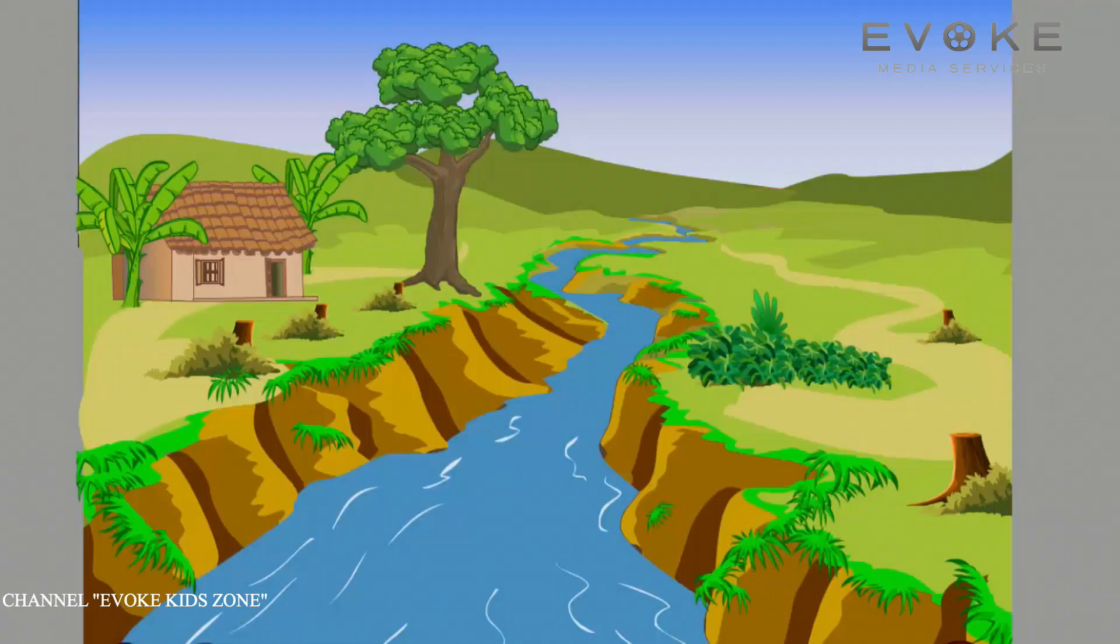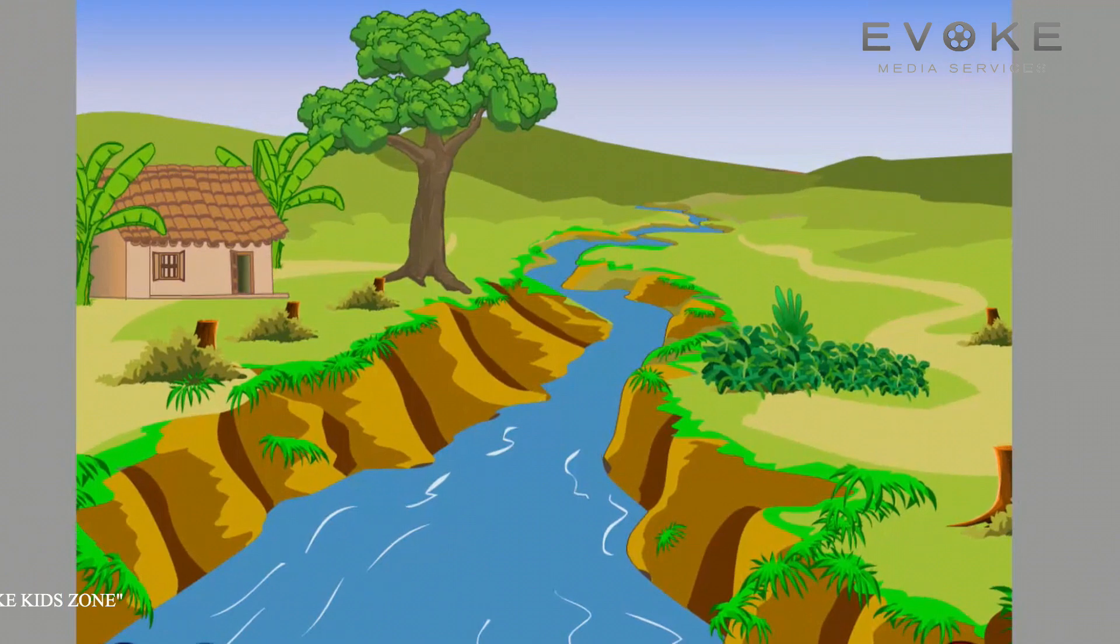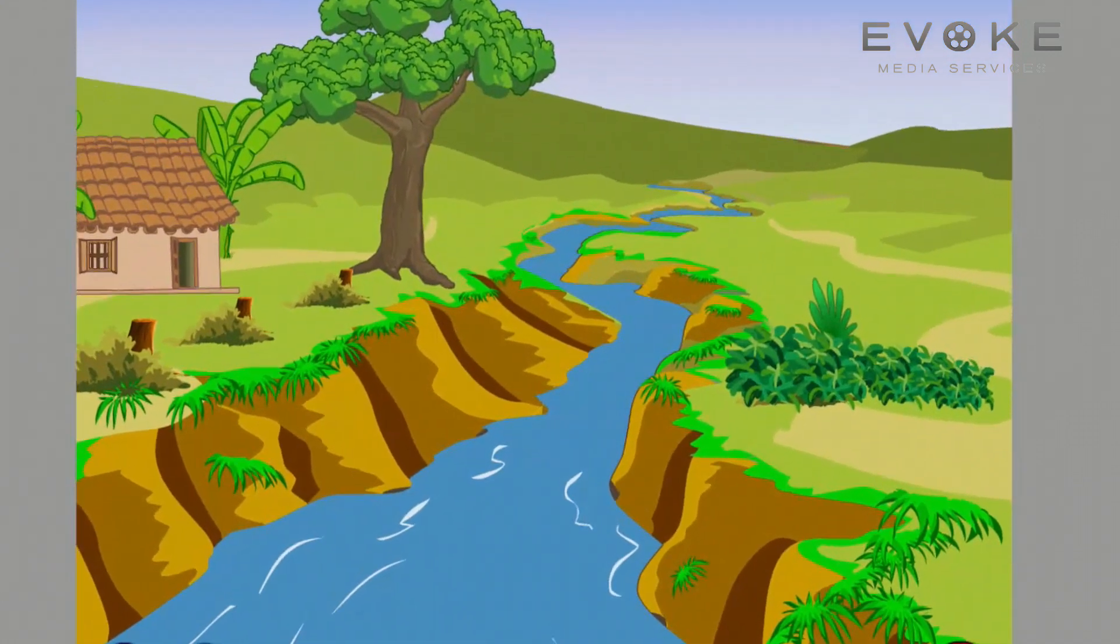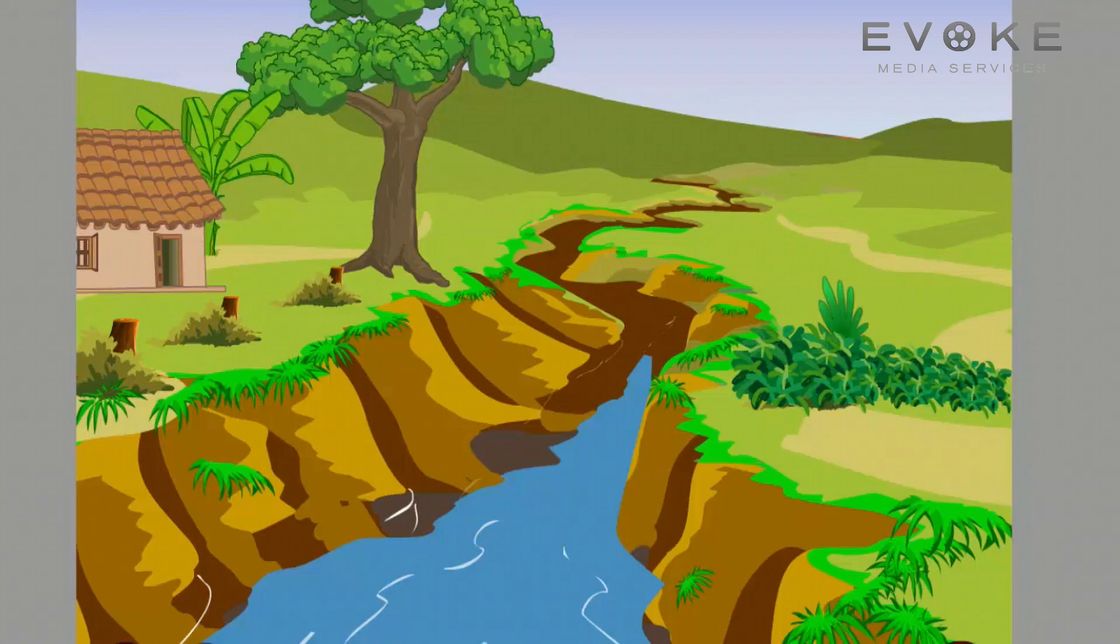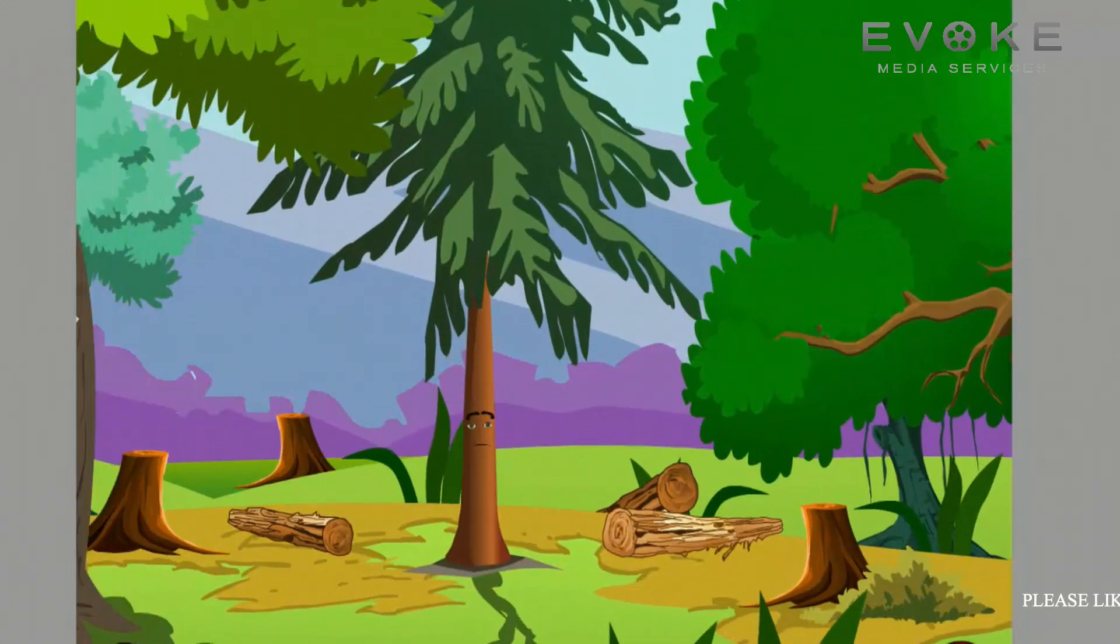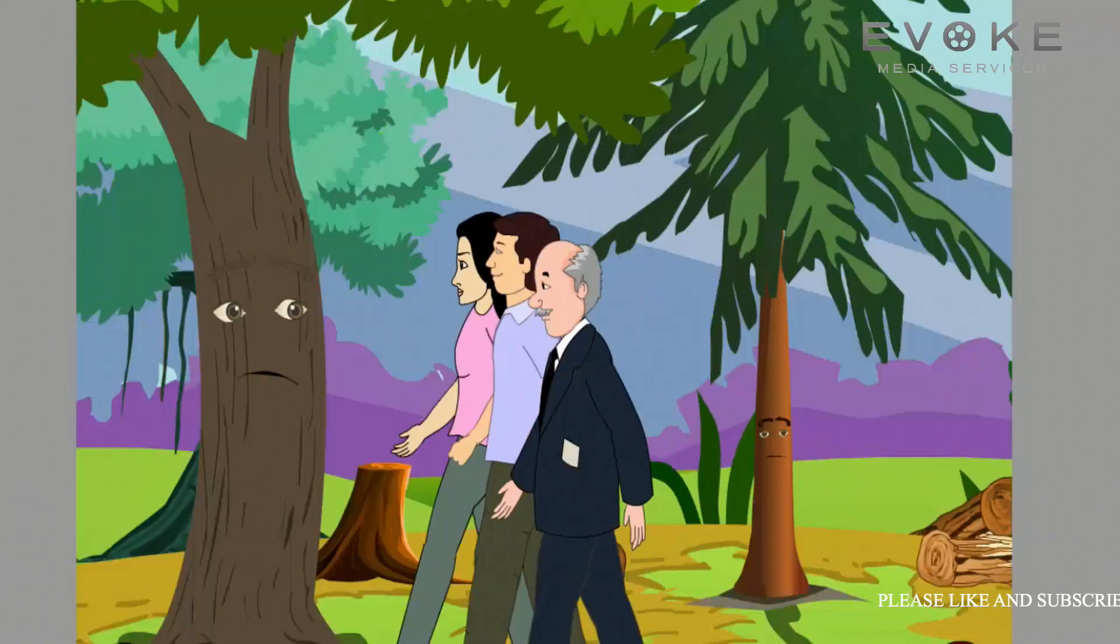The trees say that the stream that flows through the forest has dried up and the water level in the ground has gone down. As the trees are talking, they hear some people approaching.